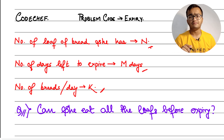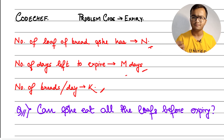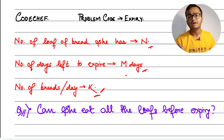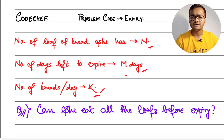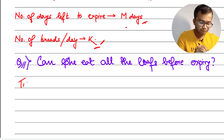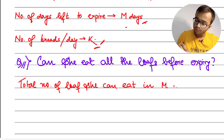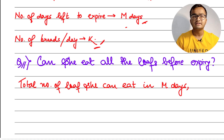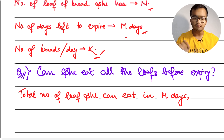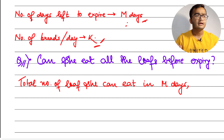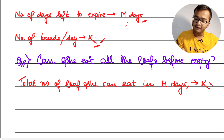What we will do is find out the total number of bread that she can eat in M days. We know the number of breads she can eat per day, which is K, and we know M days. So when we multiply these we get the total number of bread she can eat in M days. That is equivalent to K multiplied by M.